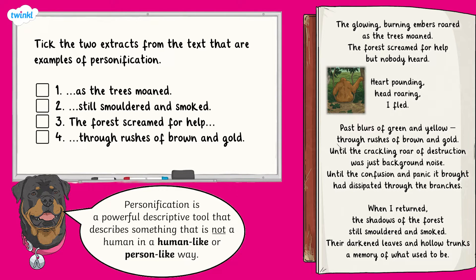Let's read the options. Option one: as the trees moaned. Option two: still smoldered and smoked. Option three: the forest screamed for help. Option four: through rushes of brown and gold. Did you spot the two pieces of personification? Remember, personification describes something that is not a human in a human-like way. Well done if you said number one and number three. Moaning and screaming are human characteristics used to describe non-human things. As we know the forest is on fire, smouldering and smoking are directly describing what's happening and are not examples of personification.